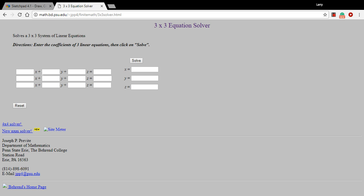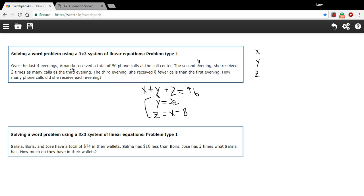So let's take a look at this equation solver. This is one provided by Penn State University. And what we need to do is have all of the equations in this form of something times X plus something times Y plus something times Z equals some number. And so we're going to have to do a little bit of rewriting with our equations. This one's in the right format. This would be 1 times X plus 1 times Y plus 1 times Z equals 96.